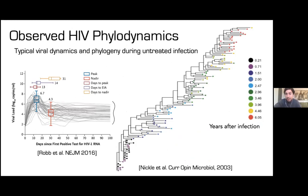Through this life cycle, during primary infection you get very repeatable viral load dynamics: beautiful data from a New England Journal of Medicine paper showing peak viral loads, then a drop, reaching a viral load set point. You get this trajectory that's really well-suited for mathematical modeling. Meanwhile there is also really repeatable viral evolution.